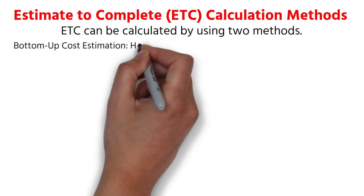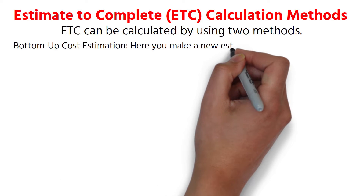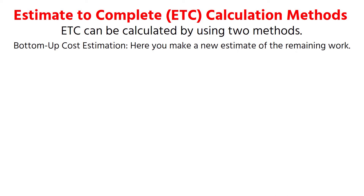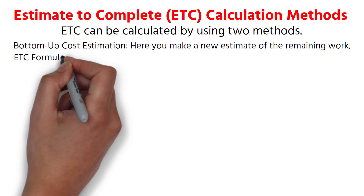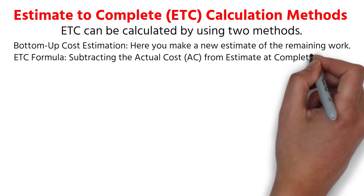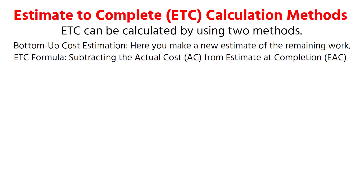The first method is Bottom-up Cost Estimation, where you make a new estimate of the remaining work. The second method uses the ETC formula, which involves subtracting the actual cost from the estimate at completion.